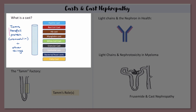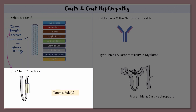Tam is a protein that is made uniquely in the kidney. If you don't have kidneys, you don't have any Tam. He's produced continuously in the thick ascending limb of the loop of Henle and he's lost continuously in our urine. Tam is a healthy protein to have in the urine — he's supposed to be there. And the more healthy nephrons you have, the more Tam that you'll produce.